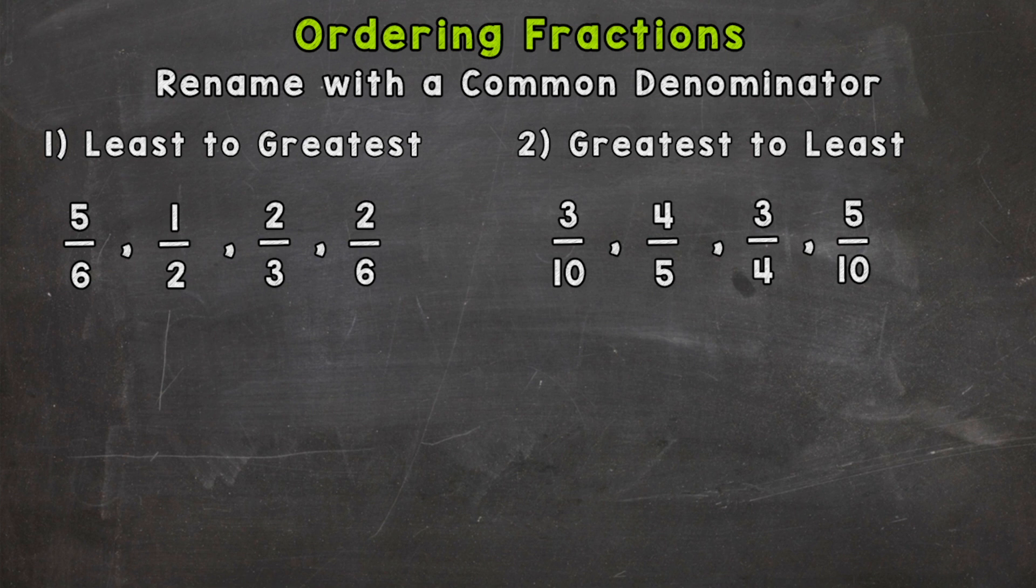So for number one we have four fractions there: 5 sixths, 1 half, 2 thirds, and 2 sixths. So the first thing we need to do is we need to see do they all have a common denominator? No. So we're going to need to find a common denominator and rename these fractions.